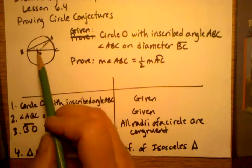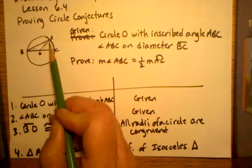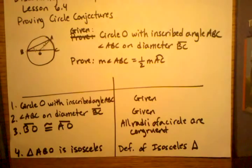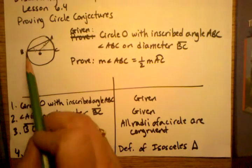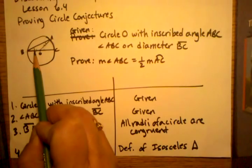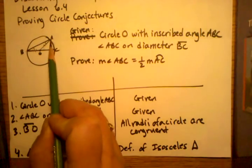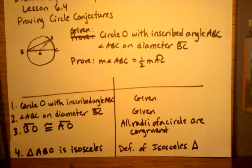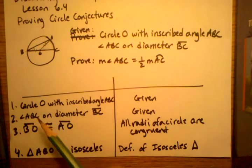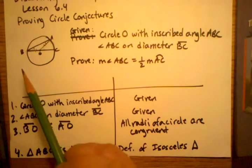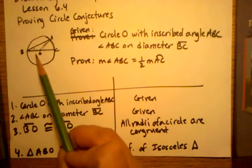Now that I've determined I have a triangle here, which in this case happens to be an isosceles triangle, I can start working with the measurements of the angles and see if I can get closer to the idea that this angle is half the measurement of this arc.